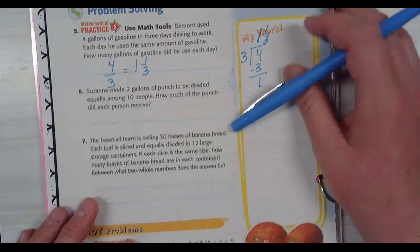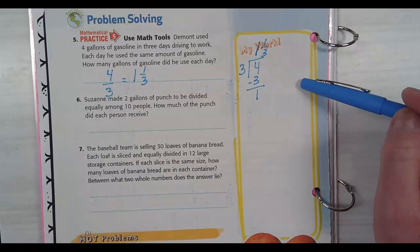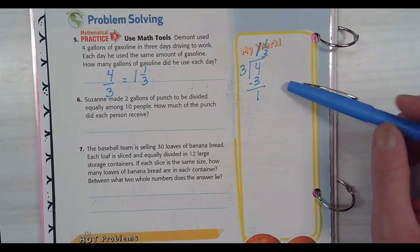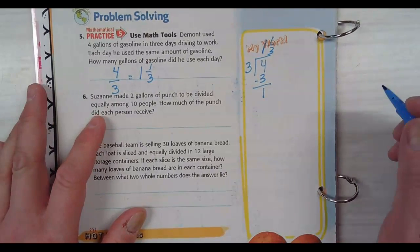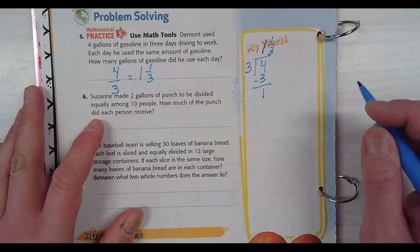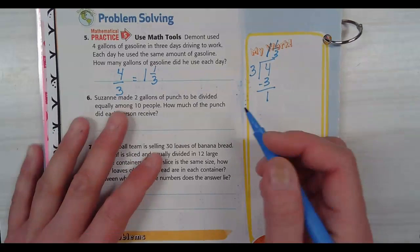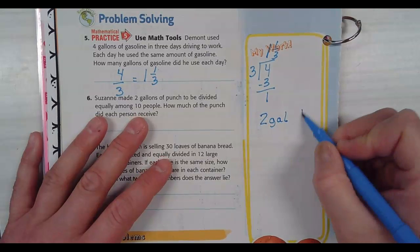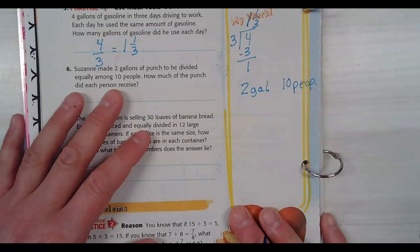Do you understand how we do the division? Give me a thumbs up if you understand. Let me slow down for the next one. Suzanne made 2 gallons of punch and is dividing it equally among 10 people. How much of the punch did each person receive? I have 2 gallons of punch split amongst 10 people.